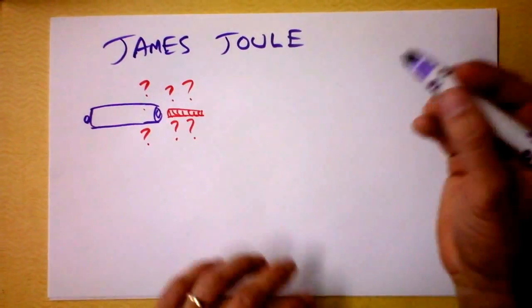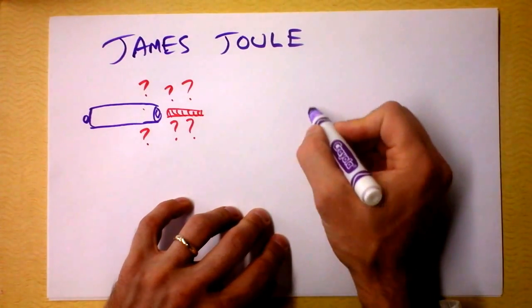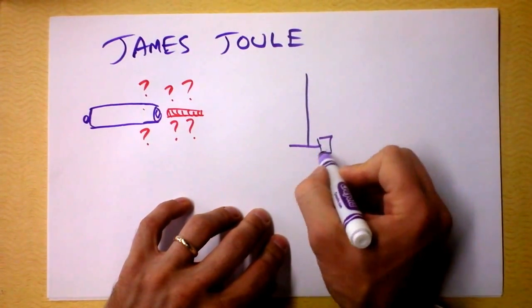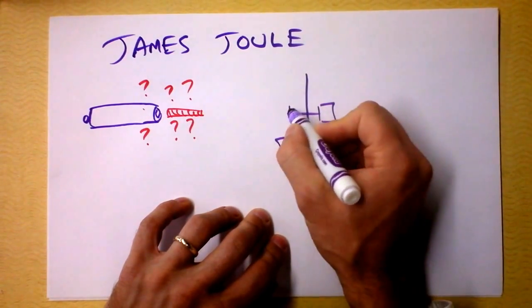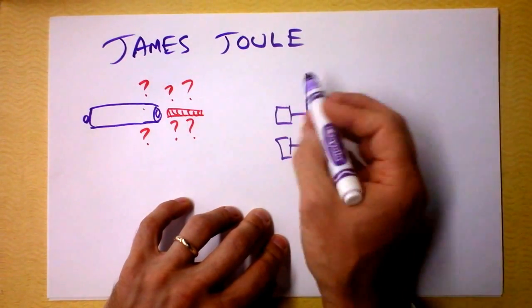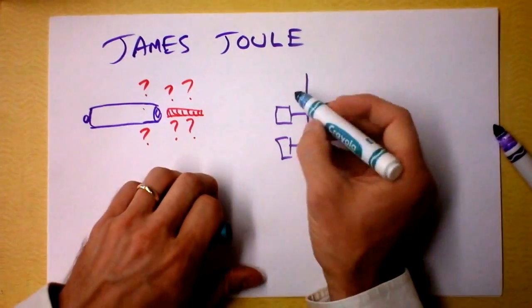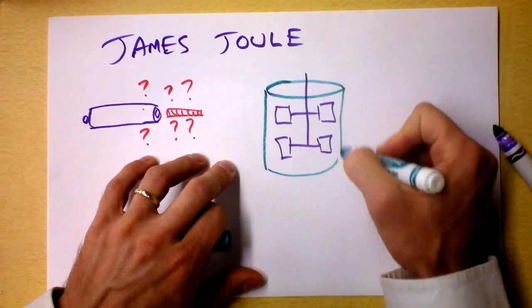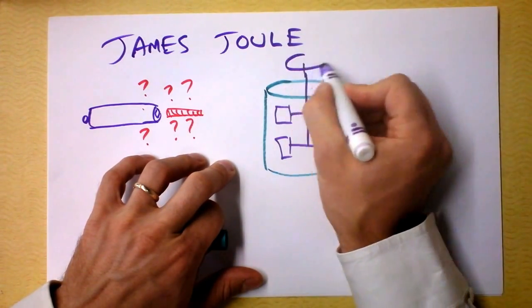But it was James Joule who devised this pretty awesome thing and it looks like this. It's a paddle system, and here's a paddle and here's a paddle, and he puts it in maple syrup or whatnot, probably even put it in water. He closes the entire thing in a barrel and the fluid's in the barrel.